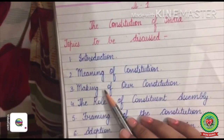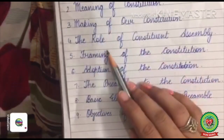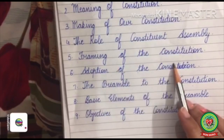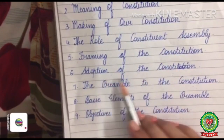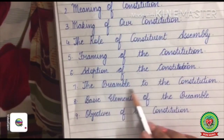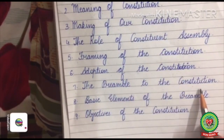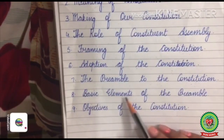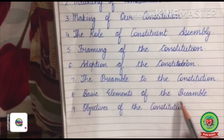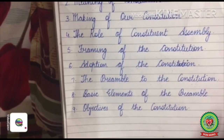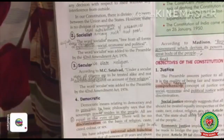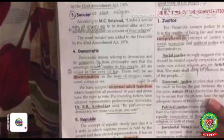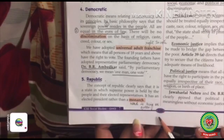Till now we have done its introduction, meaning, making of the Constitution, role of constituent assembly, framing of the Constitution, adoption of the Constitution, and the preamble to the Constitution. Today we will start basic elements of the preamble. Students, take out page number 130.